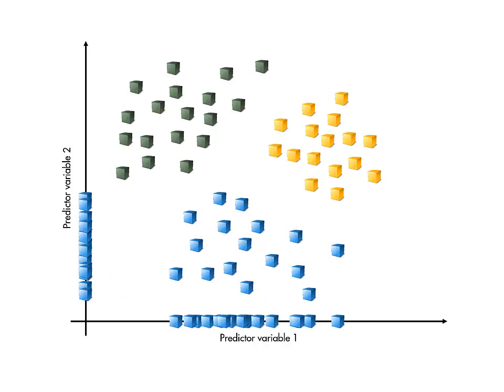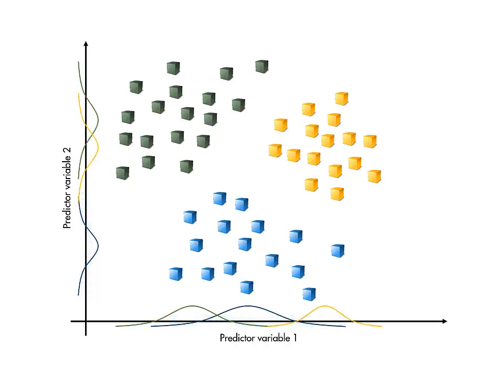Fitting a normal distribution in each variable independently involves simply calculating the mean and standard deviation for each combination of class and variable.